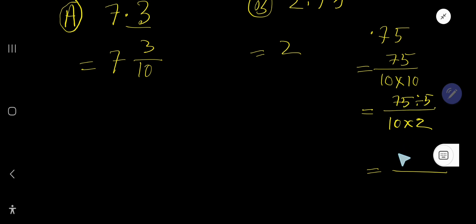5 goes into 7 one time. 1 times 5 is 5. If you subtract, you get 2, bring down this 5. 5 goes into 25 five times. That is 15, right?